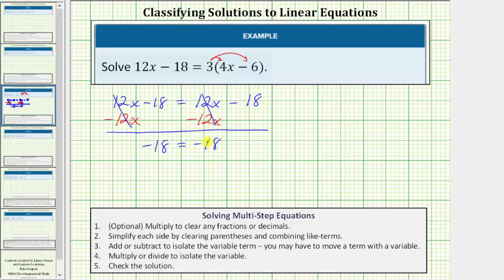So notice in the process of isolating the variable, the variable terms simplify out, and we're left with the equation negative 18 equals negative 18. Because this equation is true, this indicates the original equation has an infinite number of solutions.